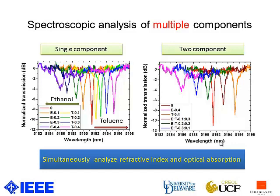Here is the transmission spectrum for single components. With increasing ethanol concentration, the resonance peak blue-shifts. While increasing the concentration of toluene, the resonance peak red-shifts. The extinction ratio changes for ethanol and toluene are different, which means ethanol absorption is higher than toluene at this particular wavelength. By applying a mixture of ethanol or toluene in cyclohexane, we can observe the resonance peak shift from red-shift to blue-shift.